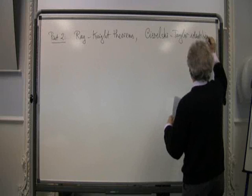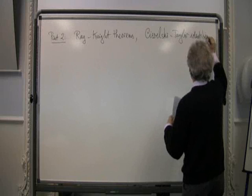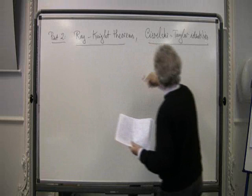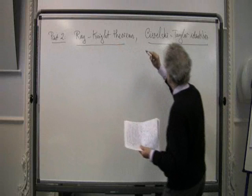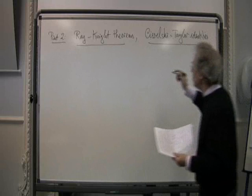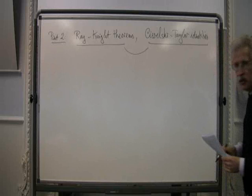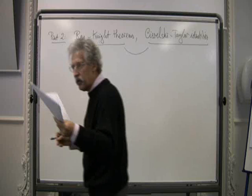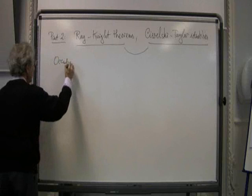I will focus very much — not entirely — but the end of this part two will be really to try to explain the Spitzer-Taylor identities via the Ray-Knight theorems. And as you will see, this is a part of what I call the coincidences. But in between, there will be also further coincidences which have been noticed by physicists. So following on your question, let me write again the occupation time formula.